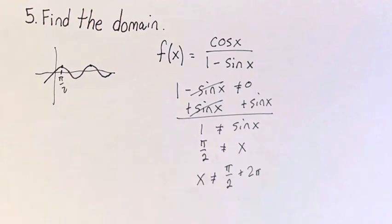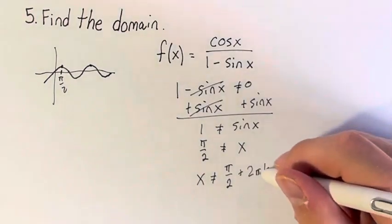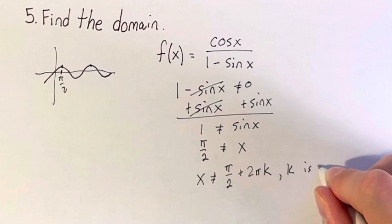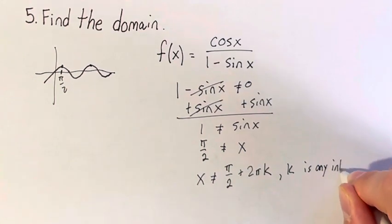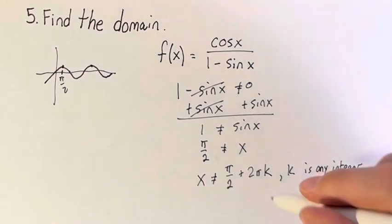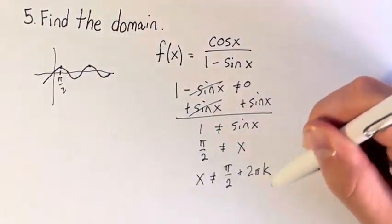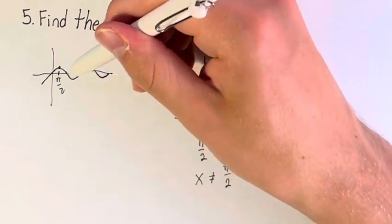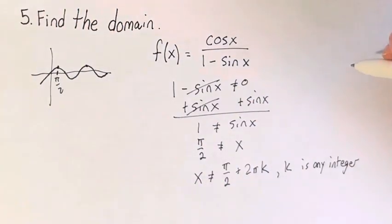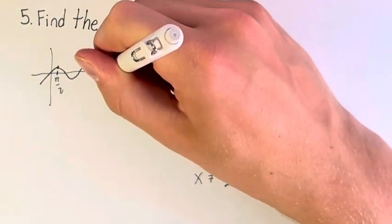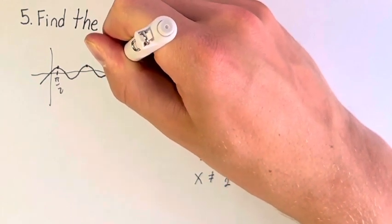So how do we do this? We say plus 2 pi k, where k is any integer, right? k is any integer. Because when you plug in any integer k, you're going to get some multiple of 2 pi, which is the number of periods away, let's say 10 periods away, it's going to hit 1 again.